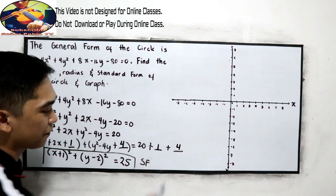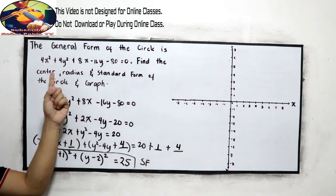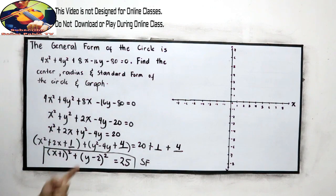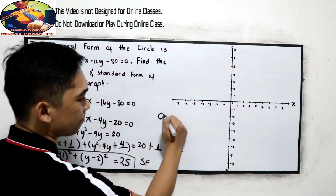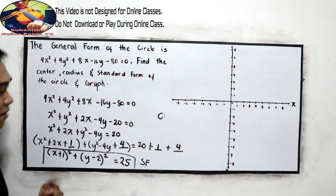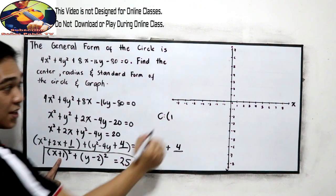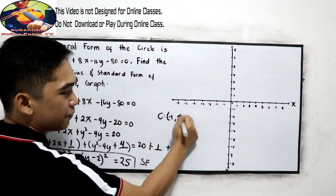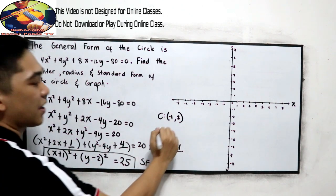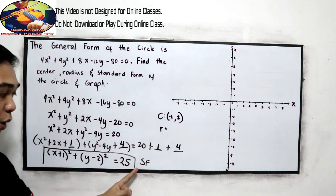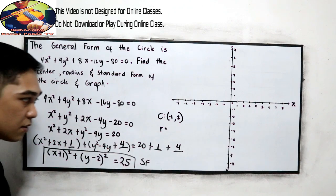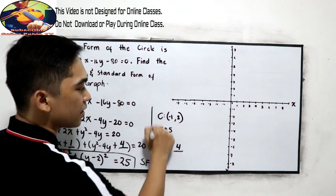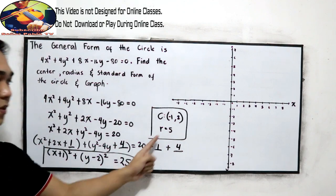Let us find the center and the radius. The center is 1, change the sign, so negative 1, and positive 2. And our radius, the square root of 25, that is positive 5. This will be our radius.